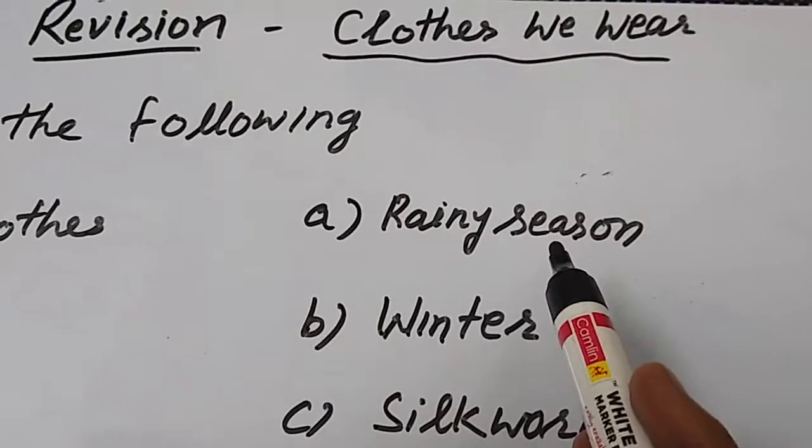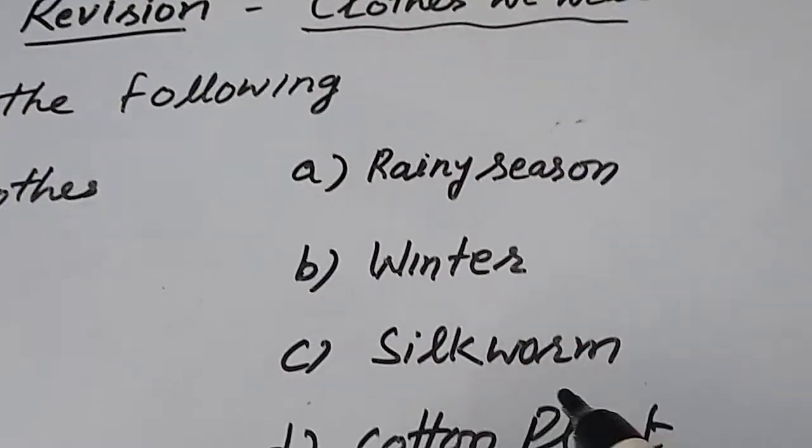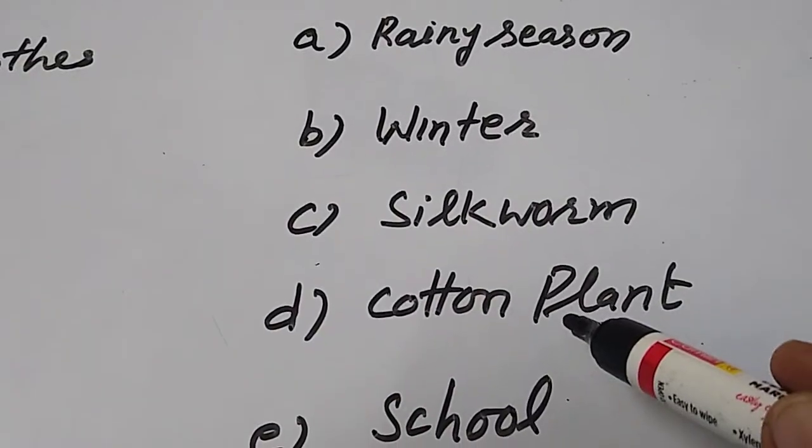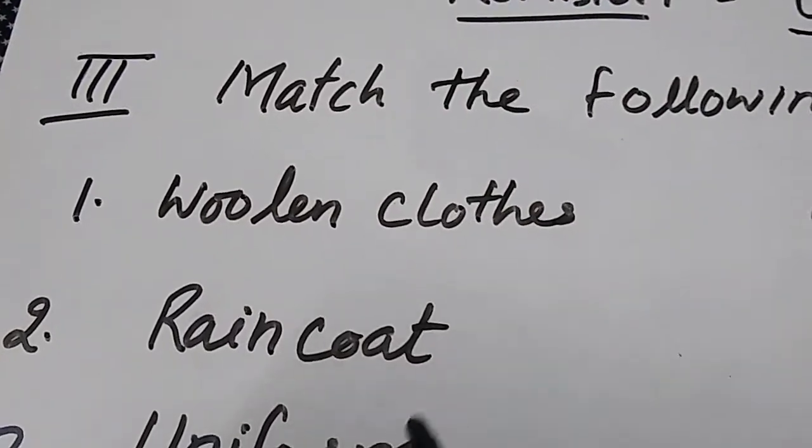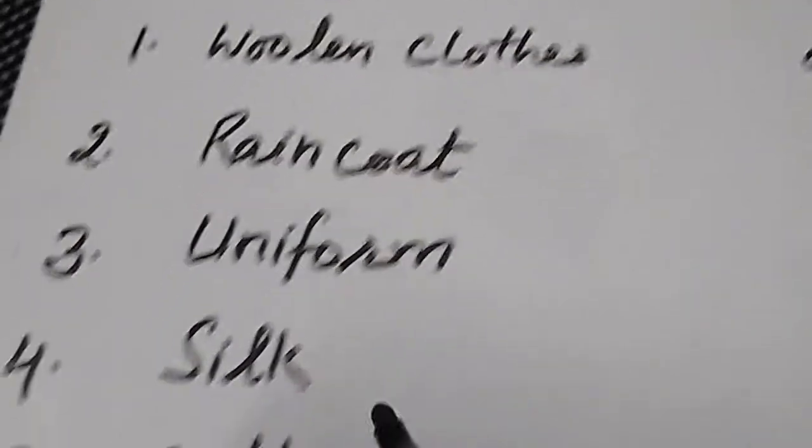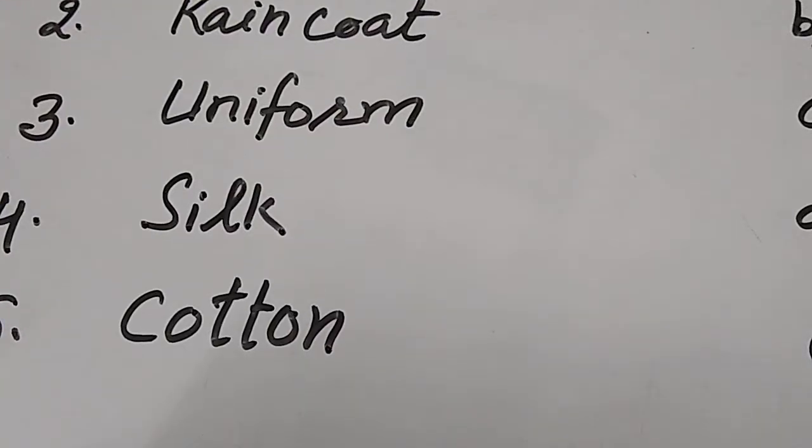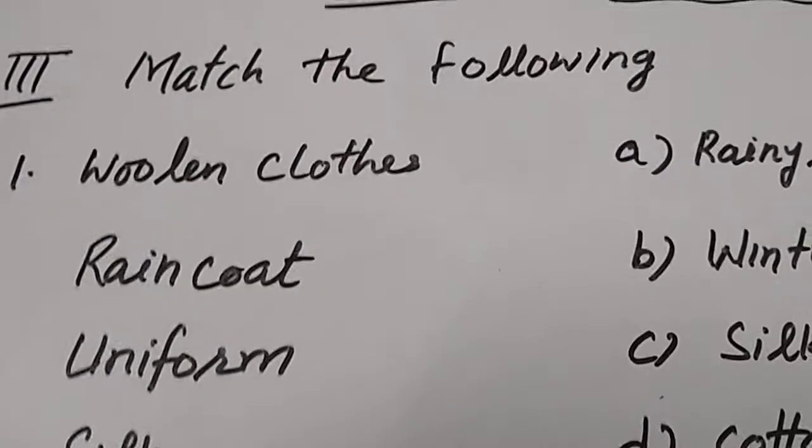The words are here: rainy season, winter, silkworm, cotton plant and school. And here are the words of woolen clothes, raincoat, uniform, silk and cotton. So now you have to match them.